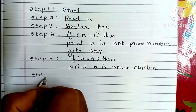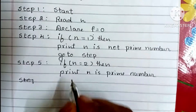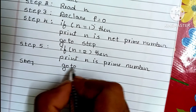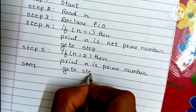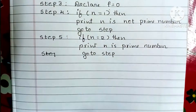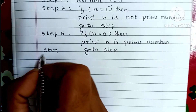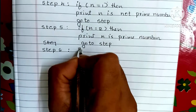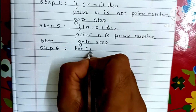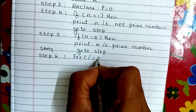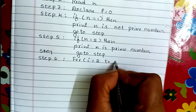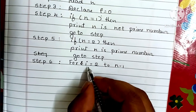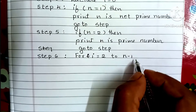After completing steps 4 and 5, we go directly to the stop statement. Step 6: we use a for loop — for I equal to 2 up to N minus 1. It will repeat until I becomes N minus 1.